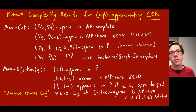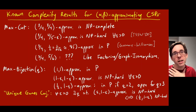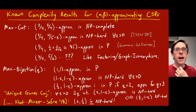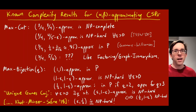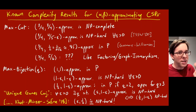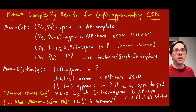Opinions on the unique games conjecture have gone back and forth. Building on several previous works, Khot, Minzer, and Safran in 2018 showed a related result: if given a max bijection instance where the optimum satisfies at least half of the constraints — not almost-satisfiable, just half-satisfiable — it is NP-hard to find even an epsilon-satisfying assignment, assuming the domain size q is large enough. This is considered 'half the unique games conjecture' and is a consequence of the two-to-one conjecture being proven true by Khot, Minzer, and Safran.